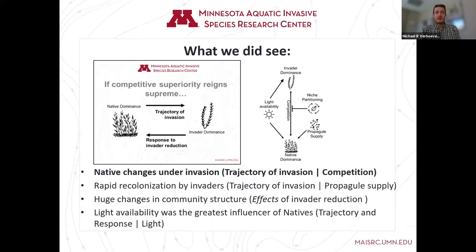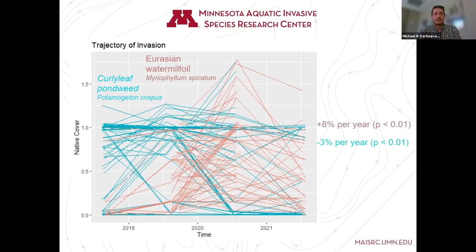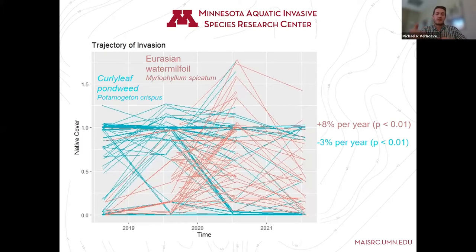Now I'd like to dive into what we found. Based on our analyses to date, first, with respect to the trajectory of invasion and the degree of competition, we found changes in native plant communities over time. When plugged into our analytical framework and consideration is given for the availability of light and the annual change from year to year, the native plant community was actually slightly increasing over time at a rate of about 8% cover per year for Eurasian watermilfoil, and decreasing over time at a rate of about 3% per year for curly leaf. This actually runs counter to our hypothesis, because we would have expected opposite results — the greater niche overlap species, Eurasian watermilfoil, would likely be a stronger competitor.